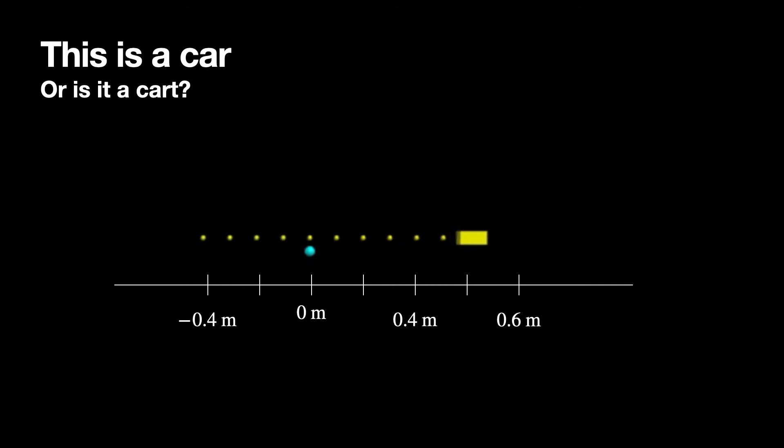The cyan dot right there is the origin, and I just picked it. You can pick wherever you want. The origin is not real. And I made a little number line right here. So it starts off at negative 0.4 meters and it moves up to 0.6 and beyond.